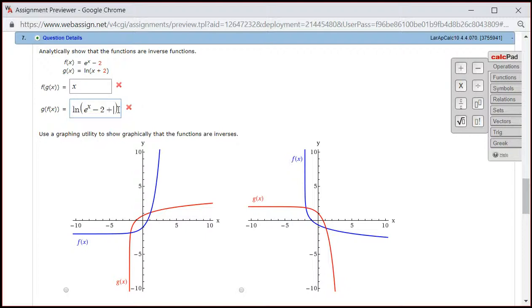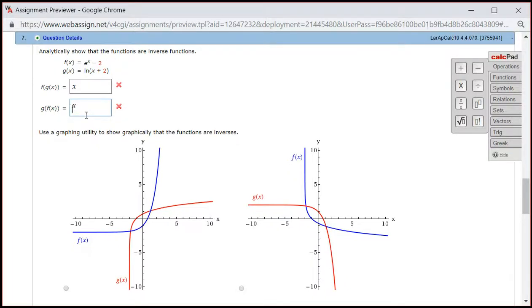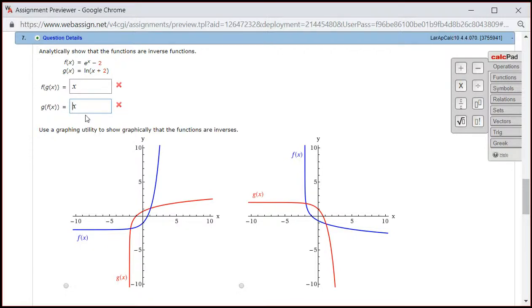you have a positive 2 and negative 2 cancel out. And the e to the x, natural log of x, again, you have exponential function and log function composed together. They cancel out. So what happens is you are left with just x, right?